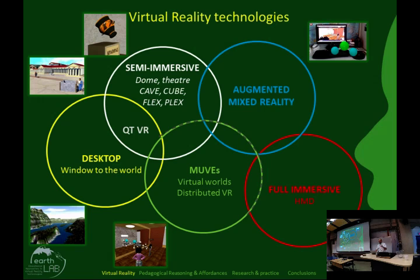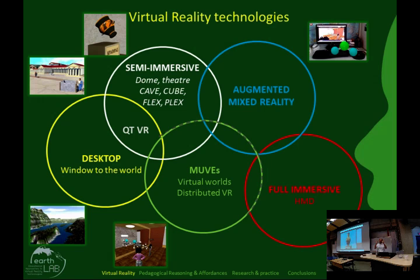QuickTime VR can be a desktop system or a semi-immersive system like domes, theatres, caves, or cubes. Here is a video from a semi-immersive system — one of our applications on archaeology and history learning. The participant wears semi-transparent glasses and looks at a video wall or computer screen, so he or she feels both the real world and the virtual world simultaneously.